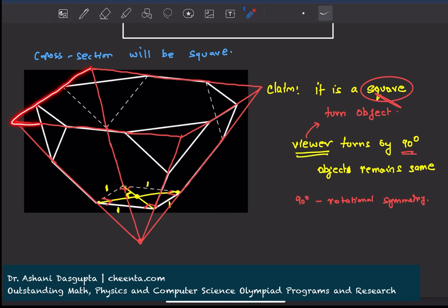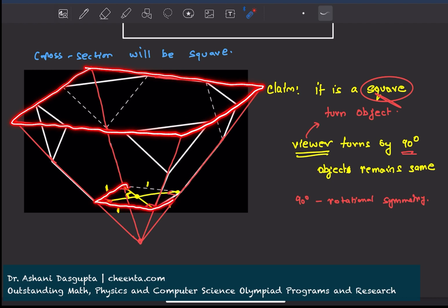This is also a cross section of the pyramid. This is also a square, because we have just argued that the cross sections of this pyramid are all squares.